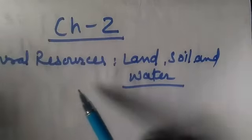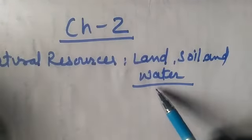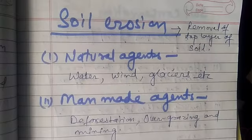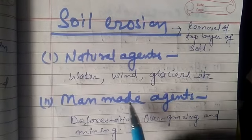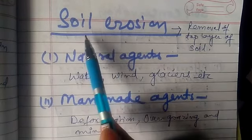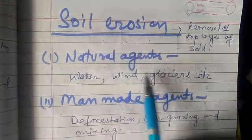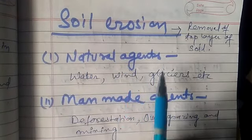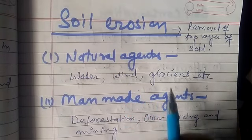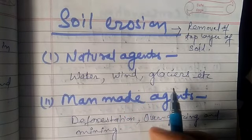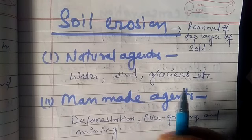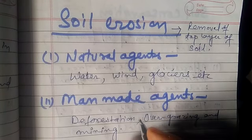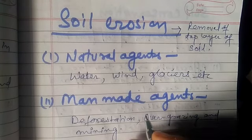Chapter 2: Natural Resources — Land, Soil and Water. Welcome children. In our previous class we were learning about soil erosion, so let's continue. Fertile soil is essential for agriculture and helps in maintaining food security of the world. But it has been observed that the fertility of soil is damaged by soil erosion.